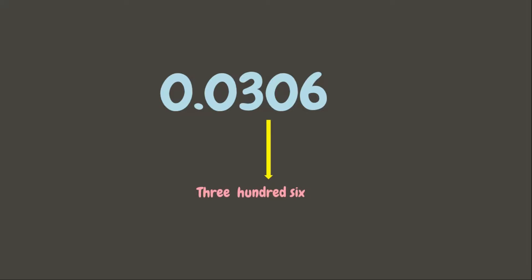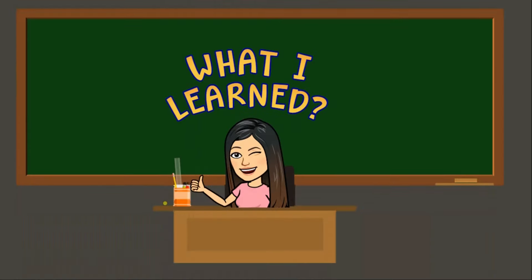Let's have one last example. Since there is no whole number, we proceed to the decimal part. We have three hundred six, and then we add the place value of the last digit, six. The place value of six is ten thousandths. Therefore we read this as 'three hundred six ten thousandths.' Well done! What have you learned today? Comment it down below. See you next time!